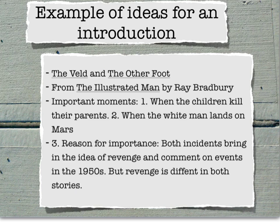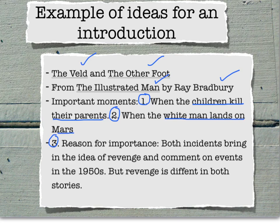I've given you a few bullet points that you could use to structure into a proper paragraph to make up your introduction. I've included the titles of both short stories, the anthology they come from, and the author. Then I look at what my three main body paragraphs could entail. I start with The Veldt and look at when the children actually kill their parents. Then in paragraph two, The Other Foot, where the white man lands on Mars. I've chosen those two moments because they both bring in the idea of revenge, used in two very different ways in these two 1950s short stories.